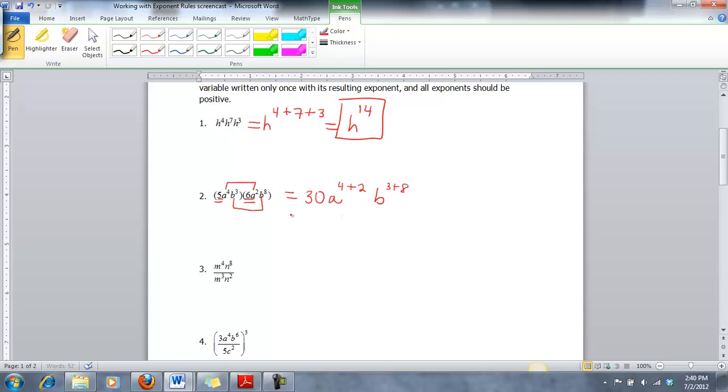You don't have to write this stuff out every single time, but I think it's good for the first few times for you to get the hang of these problems. That'll give us thirty, then we'd have a to the sixth and b to the eleventh. Again I have my variables written only once and all my exponents are positive. So I'm done. That's my final answer.